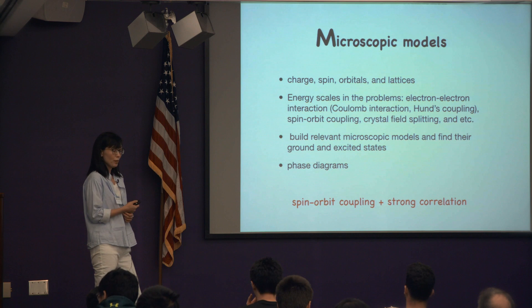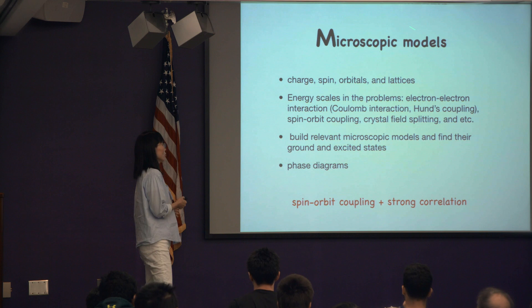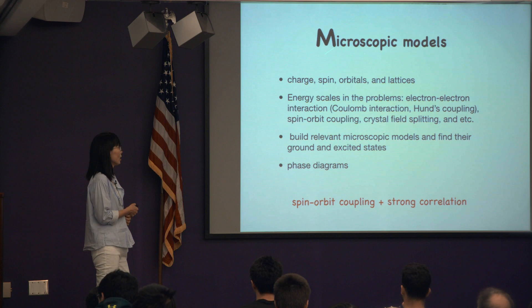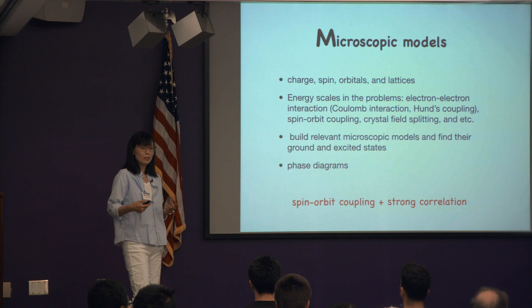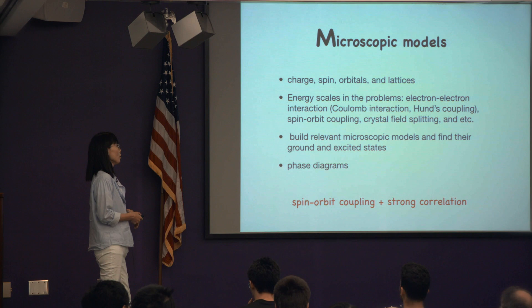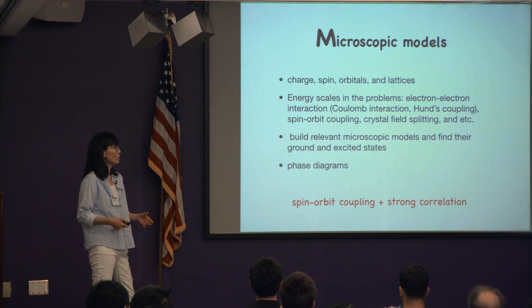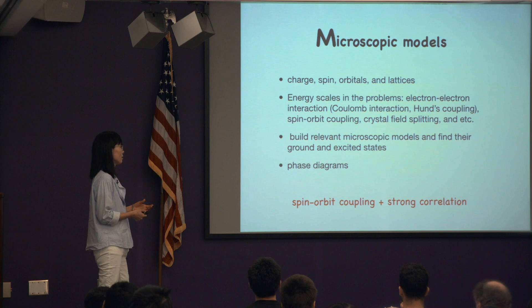Looking at physics problems, one can do coarse-grained effective field theory, but when you go to microscopics, we are looking at degrees of freedom: charged spin orbitals on a lattice. Depending on what type of lattice we have, we might end up with different types of microscopic Hamiltonians. Once you have those degrees of freedom, we look at energy scales such as electron-electron interactions, screened Coulomb, Hund's coupling for multi-orbitals, spin-orbit coupling, and crystal field splittings.